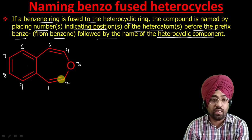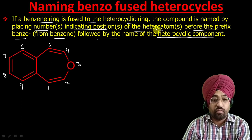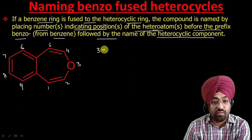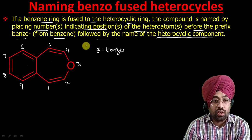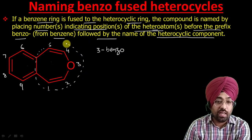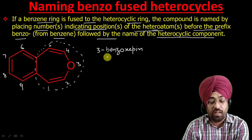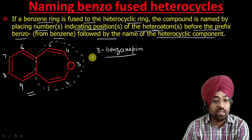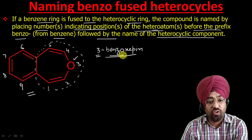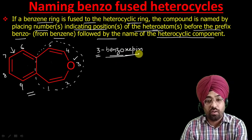According to this rule, first we indicate the position of the hetero atom. Our hetero atom is at position three, so we write '3,' then add the prefix 'benzo,' giving '3-benzo.' Then we give the name of this heterocyclic compound — it is a seven-membered ring containing oxygen, so its name is oxepine. Therefore, the full name is 3-benzooxepine: '3' indicates the position of the hetero atom, 'benzo' indicates the attached benzene component, and 'oxepine' is the name of the heterocycle.